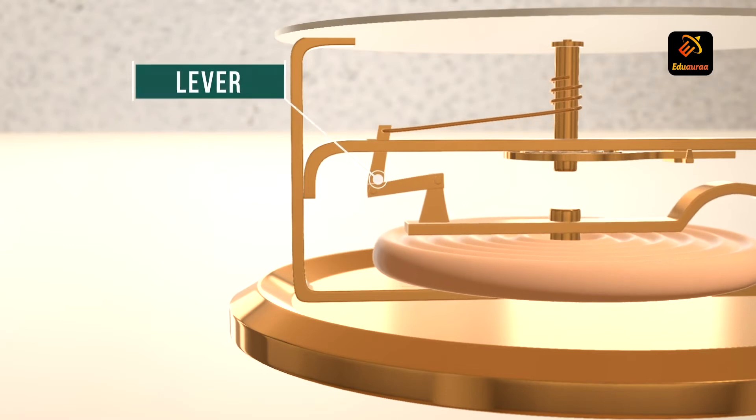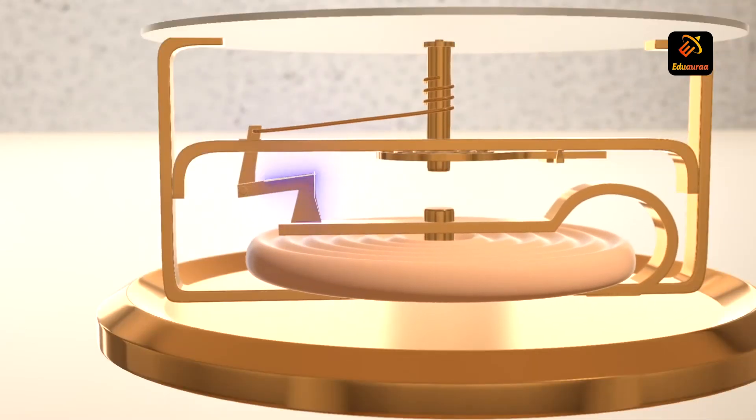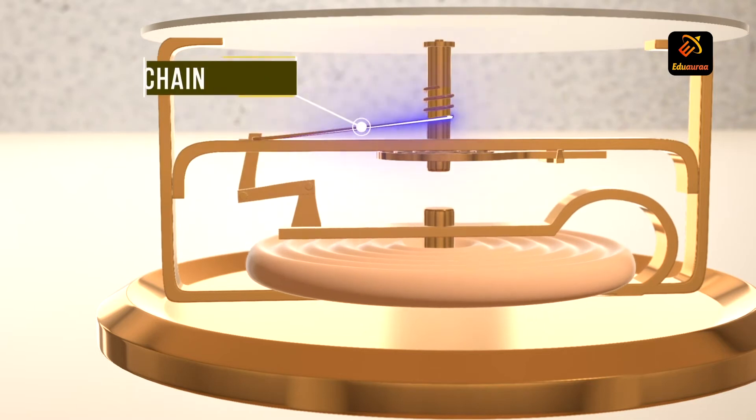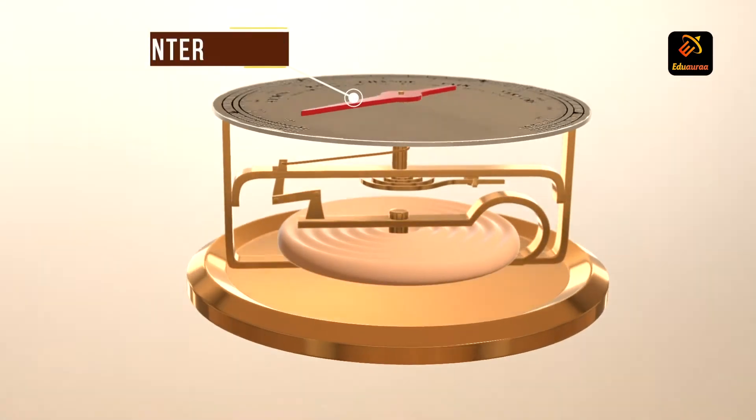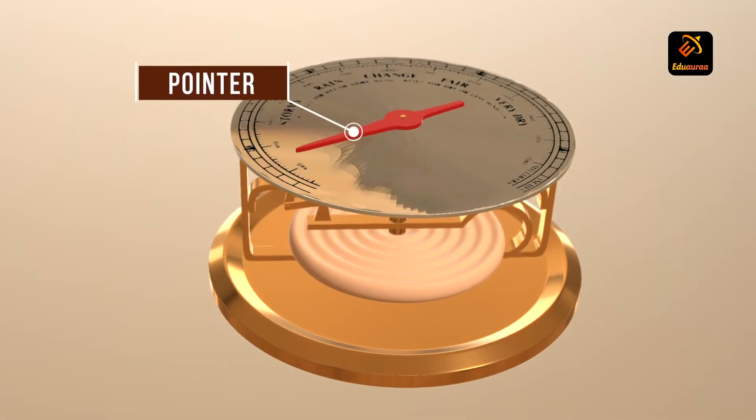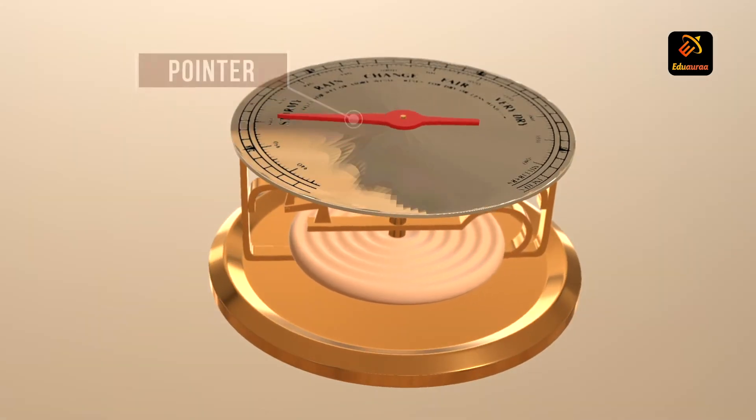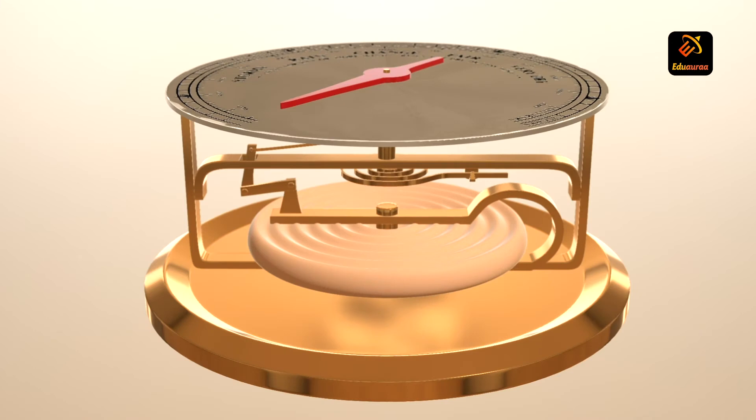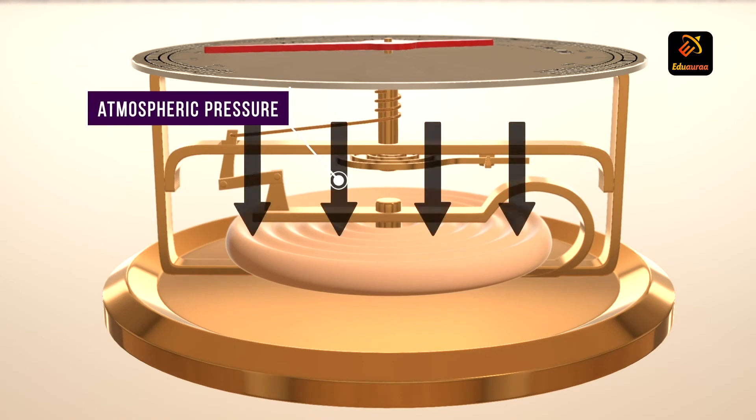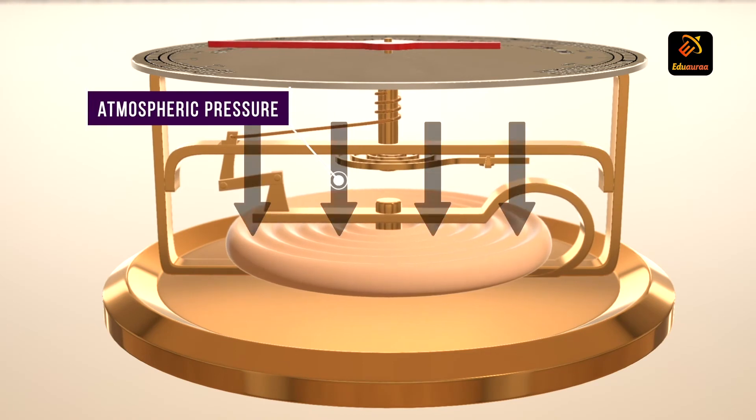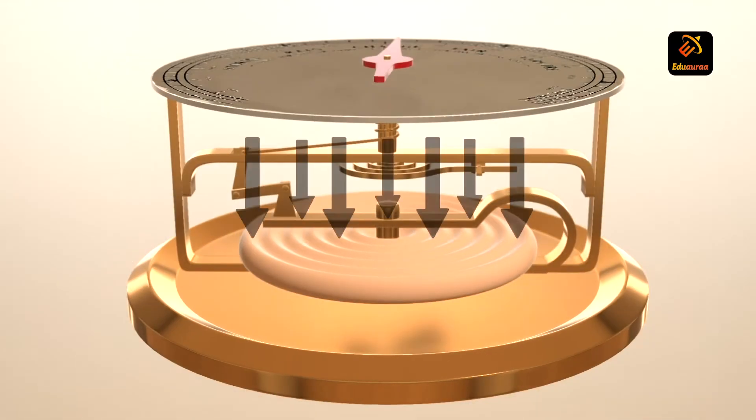A system of levers transfers this motion from the diaphragm through the chain to the pointer. This pointer is connected to the dial. The dial has calibrations of various atmospheric pressure levels. More the pressure, more the motion of the dial. Now let us go in reverse.